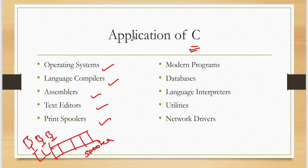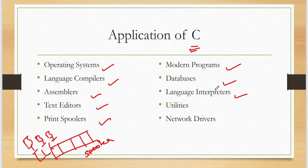C is also used in modern programs, databases, and language interpreters. Interpreters execute a program line by line, whereas compilers translate the whole program and then execute it. If there is an error in the first line, an interpreter stops execution there. A compiler, on the other hand, checks all lines — say 10 lines — and points out all errors at once. So compilers check the whole program, while interpreters check line by line.